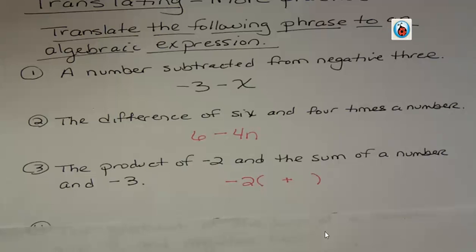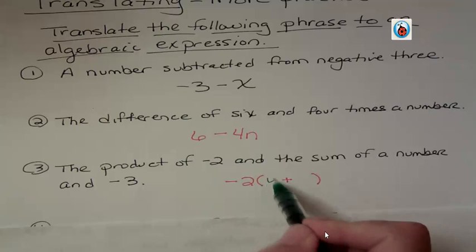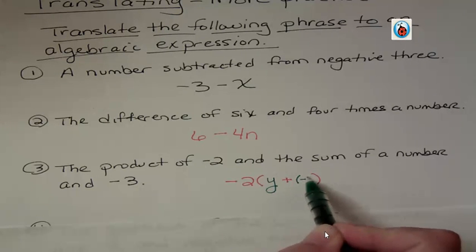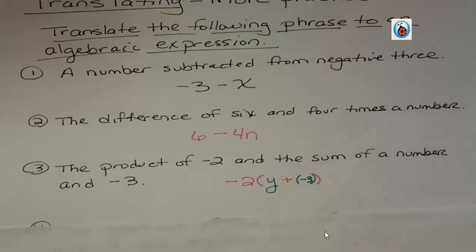And the sum that we have is a number and negative three. So a number I could say is y and then negative three like that. So that is the product of negative two and the sum of a number and negative three.